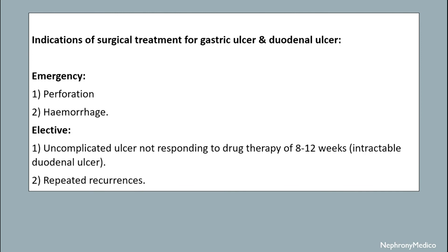Indications for surgical treatment for gastric and duodenal ulcer include emergency situations like perforation and hemorrhage. Elective surgery can be done in cases of uncomplicated ulcer not responding to drug therapy of 8 to 12 weeks, or in cases of repeated recurrences.